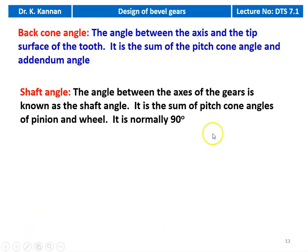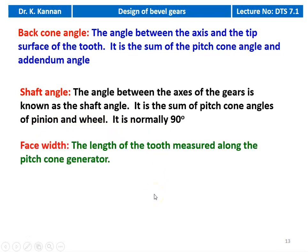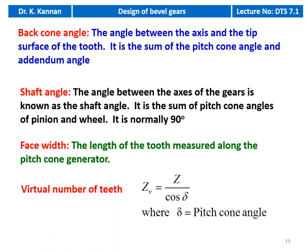Back cone angle is the angle between the axis and the tip surface of the tooth — it is the sum of the pitch cone angle and the addendum angle. Shaft angle is the angle between the axes of the gears; it is normally 90 degrees for straight bevel gears. Face width is the length of the tooth measured along the pitch cone generator. Virtual number of teeth: Z_v = Z / cos(δ), where δ is the pitch cone angle and Z is the number of teeth on the pinion or gear.